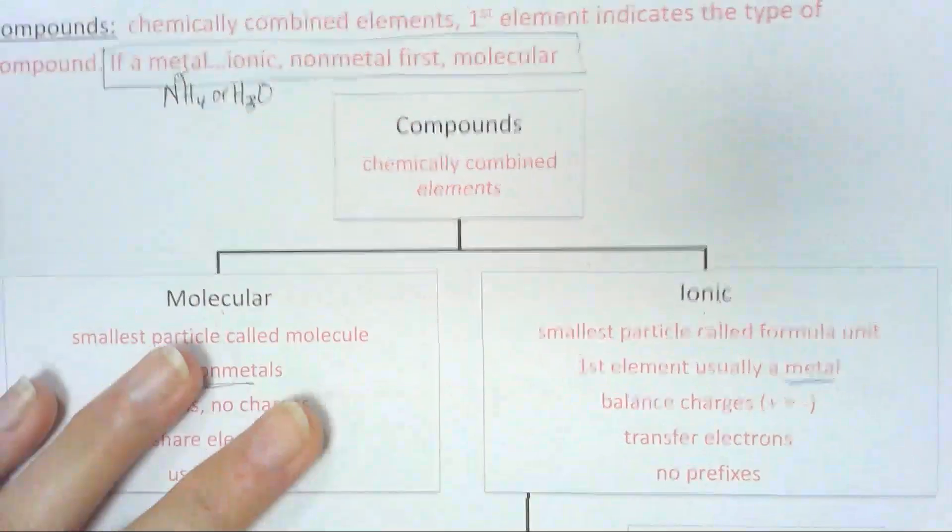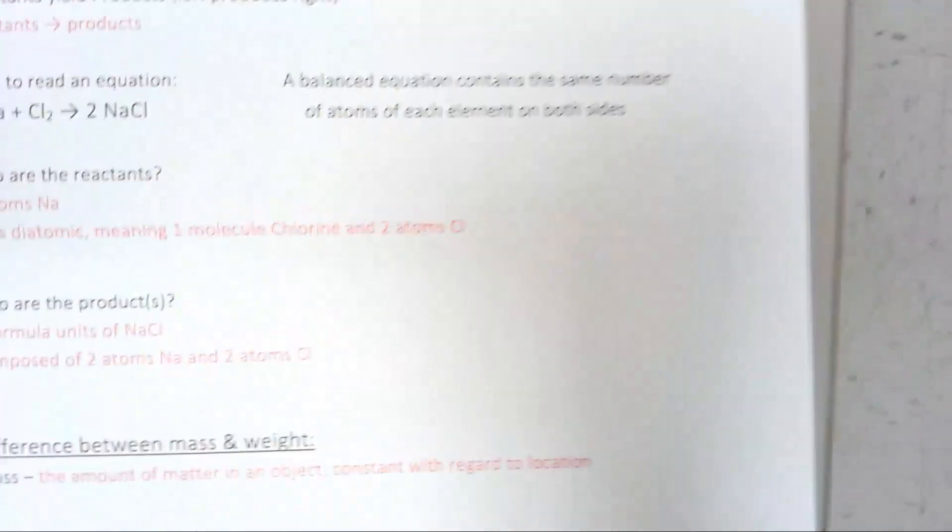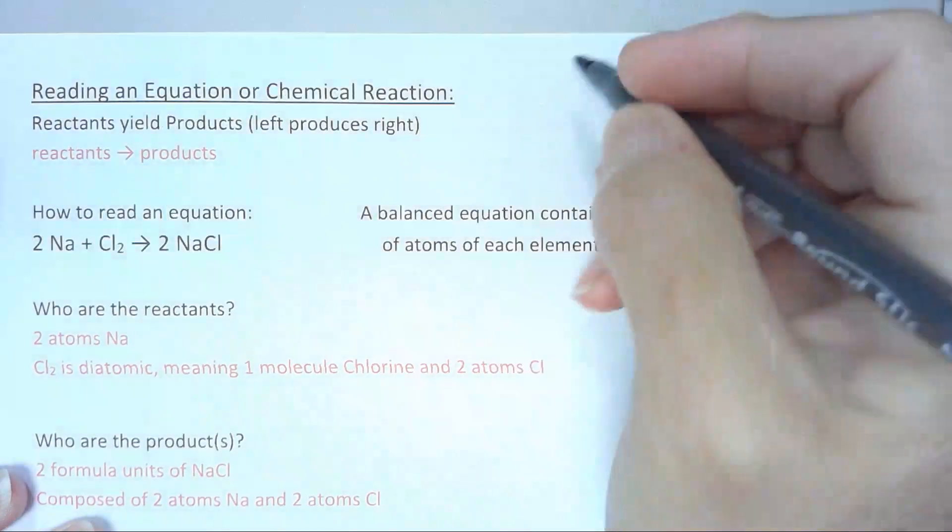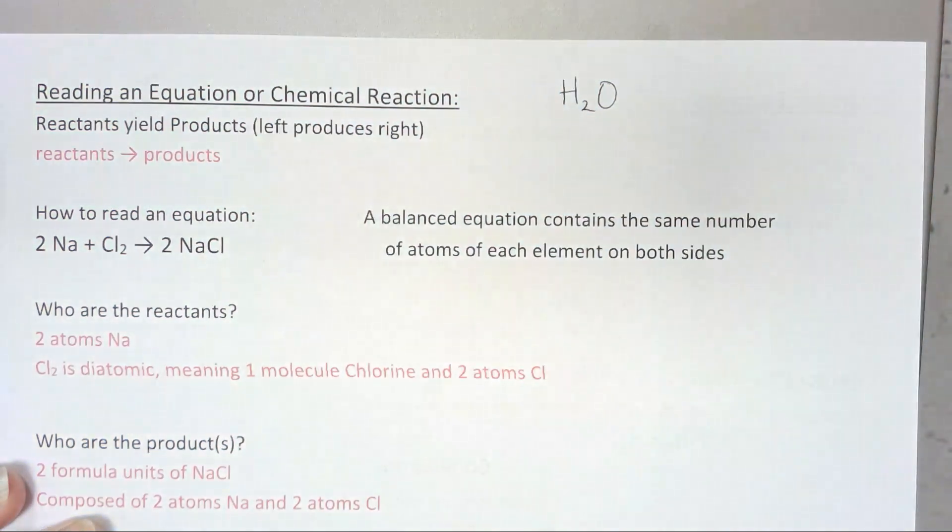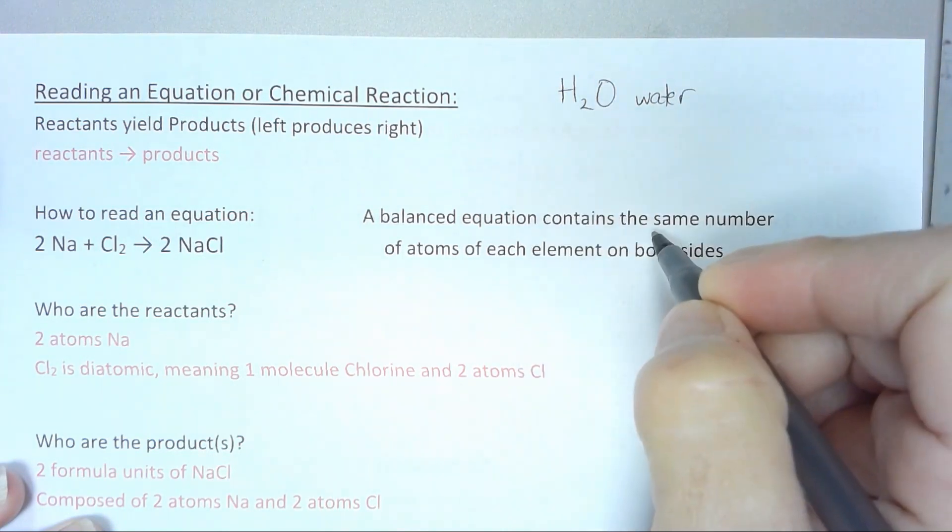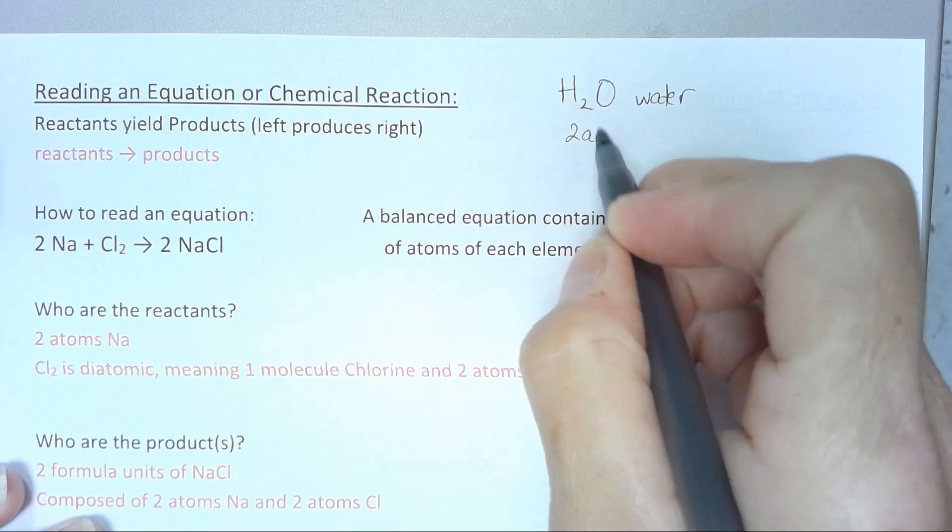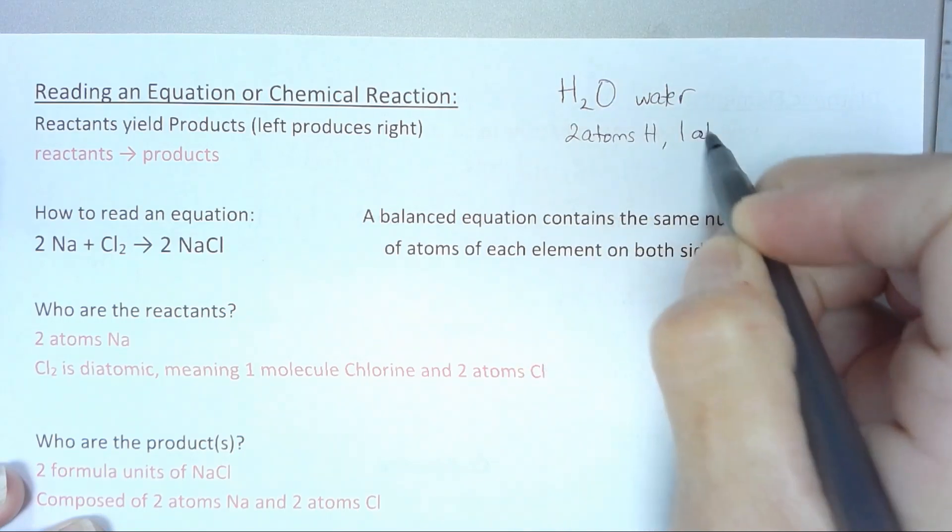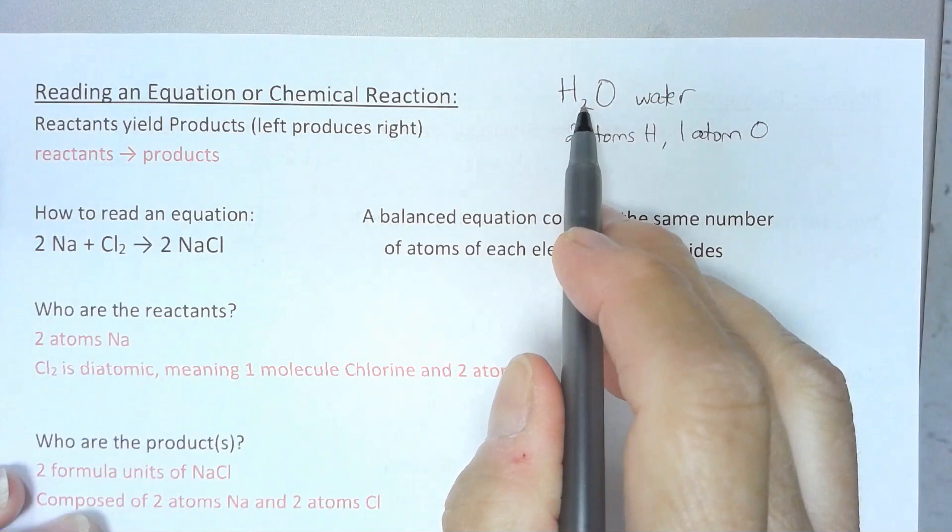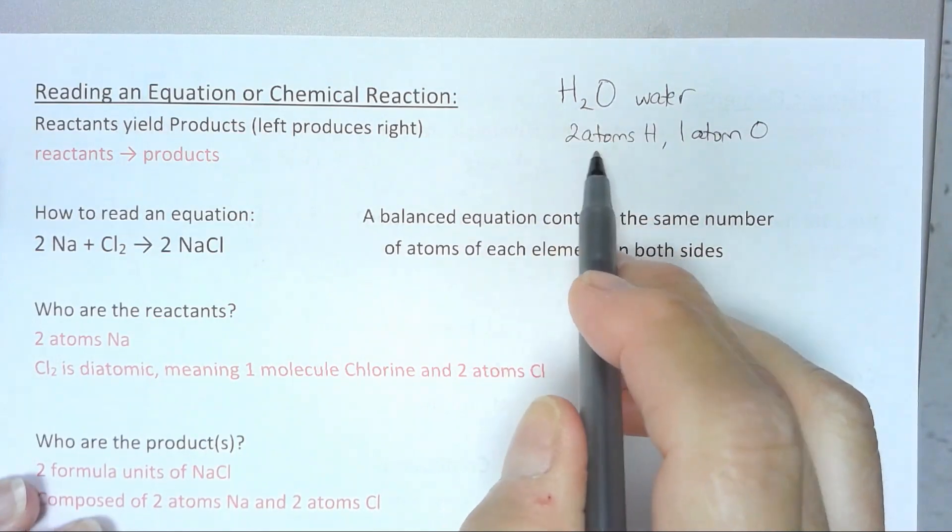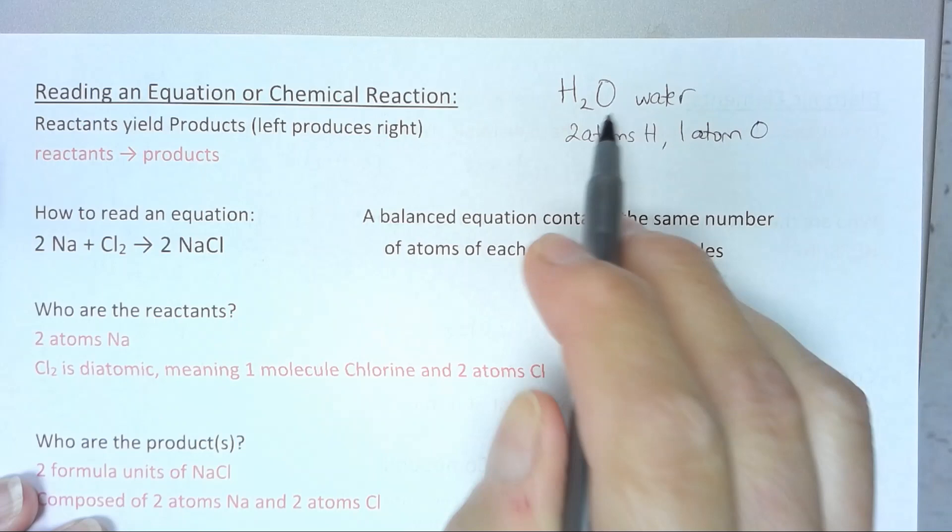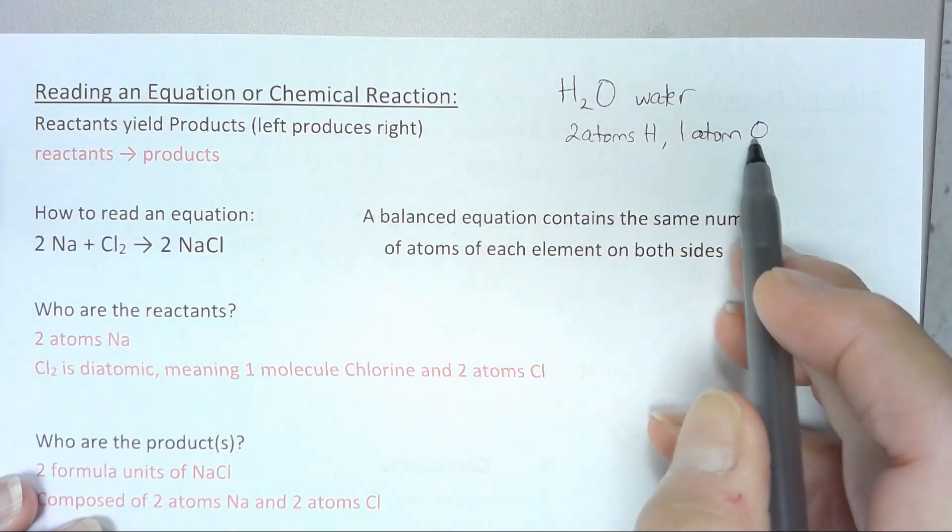It's also important for us to learn how to read compounds and read equations. I'm going to start off first with just that simple compound of water. I've written water. All I want you to do right now is tell me about atoms. It's two atoms of hydrogen and one atom of oxygen. That's what that means. The subscripts indicate number of atoms. And if there is not a subscript, it means one. So we are learning to read a compound formula.